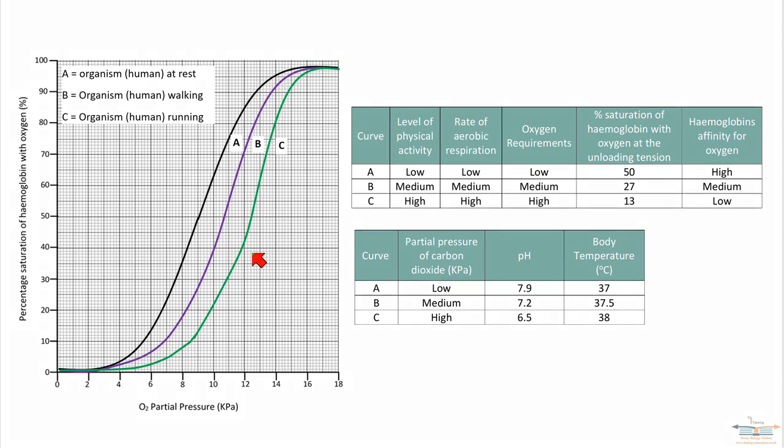So why is that biologically important? Well, these curves represent three different conditions that someone can be at. A: someone at rest, B: walking, C: running. I think it's obvious to say that those three different types of activity require different levels of energy. If you're at rest, that's a low energy demand. When you're walking, you require a bit more energy. When you're running, that requires a lot of energy.